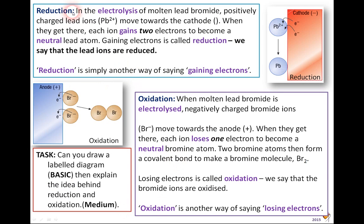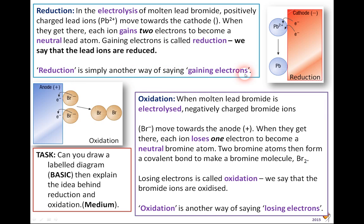Reduction: in electrolysis of molten lead bromide, positively charged lead ions, Pb²⁺, move towards the cathode. When they get there, each ion gains two electrons to become a neutral lead atom. We can see this in the diagram — the ions gain electrons and then slide down the electrode to form a metal. We say the lead ions are being reduced. Reduction is another way of saying gaining electrons.